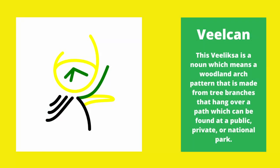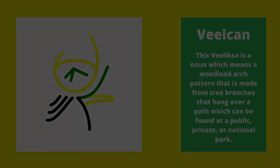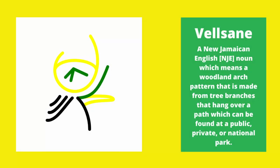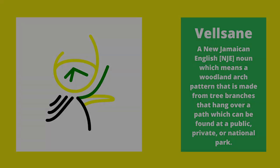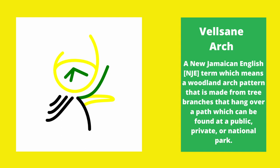Velsan is a new Jamaican English word that originated from the Oynish word called Velsan. Velsan is defined as a woodland arch pattern that is made from tree branches that hang over a path, which can be found at a public, private, or national park. The English word resulting from this definition is Velsan, or the term Velsan Arch.